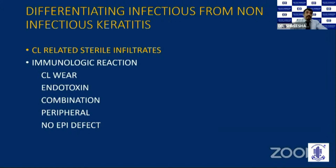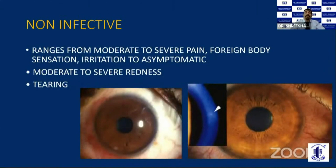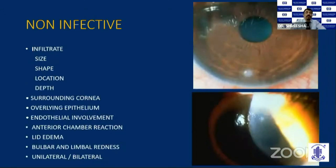Sterile keratitis in contact lens-related cases is most often an immunological reaction due to contact lens wear itself, endotoxins from bacteria, or a combination of both. Most often, these sterile infiltrates are located in the periphery of the cornea, and there may not be any epithelial defect. The symptoms are mild compared to microbial keratitis. The infiltrates are small — pinhead size or less than or equal to one millimeter — and rarely is there any hypopyon or anterior chamber reaction.